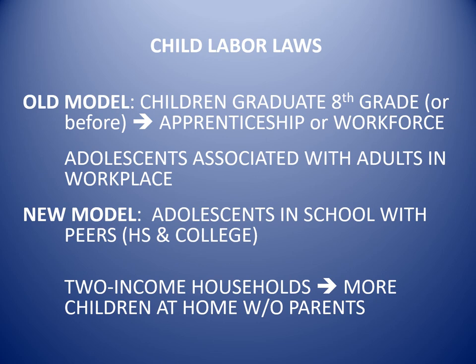The new model is that adolescents are in school with their peers, and this is true not just for high school but also for college-age years. The people you're most likely to interact with are people your same age. High school students mostly interact with other high school students, and college students the same. Your reference groups are mostly going to be people of the same age — in the past, your reference group would have been adult peers you were working with, and eighth or ninth grade-aged individuals were basically treated as adults latching on to adult social life.